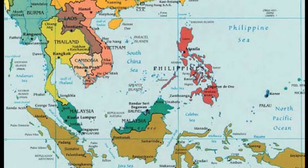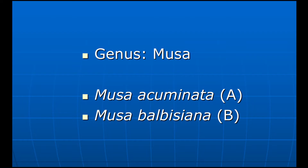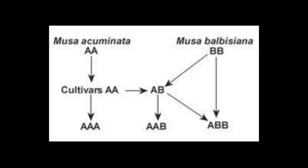The genus Musa contains two edible banana species: Musa acuminata and Musa balbisiana. Chromosomes of Musa acuminata are denoted by A, and chromosomes of Musa balbisiana are denoted by B. Modern consuming bananas are a product of crosses between Musa acuminata and Musa balbisiana, and cultivars are diploid or triploid.